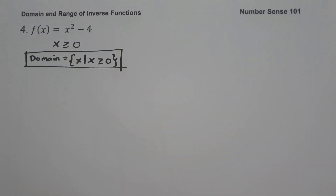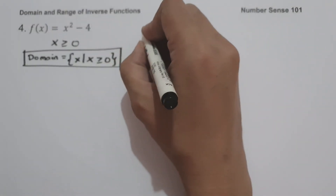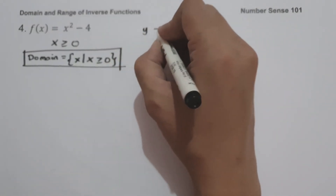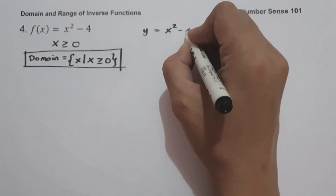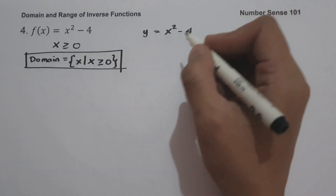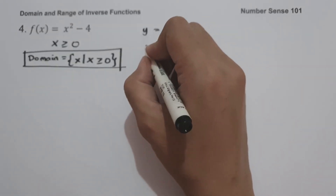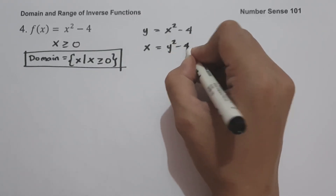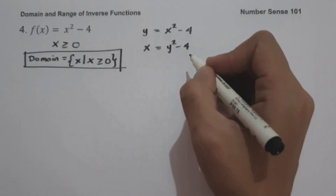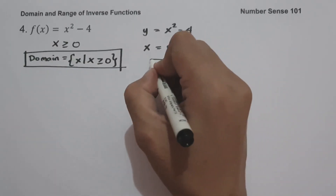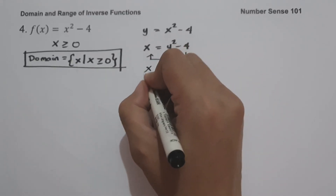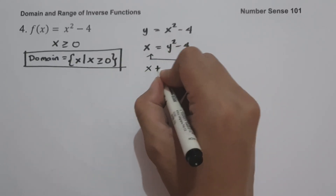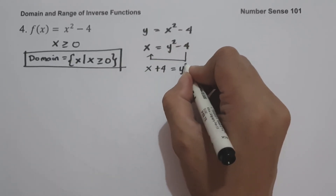To find the range of the given function, let us find first the domain of the inverse function. Rewriting as y equals x squared minus 4 and interchanging x and y variables gives x equals y squared minus 4. Solving for y, we move negative 4 to get x plus 4 equals y squared.